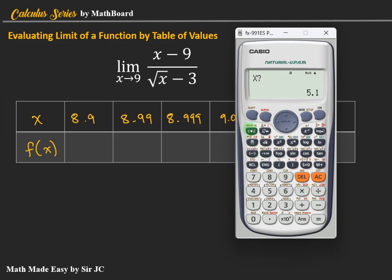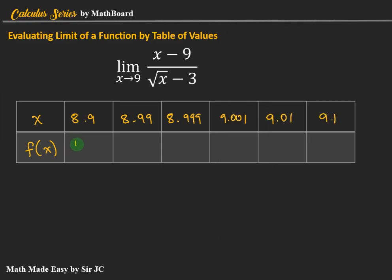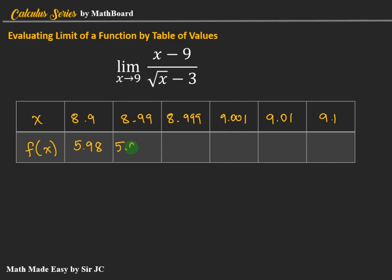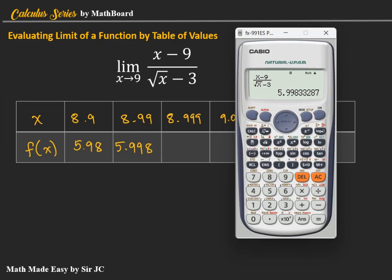So we replace x by 8.9, and the result is 5.98. For 8.99, the result is 5.998. For 8.999, the result is 5.999.